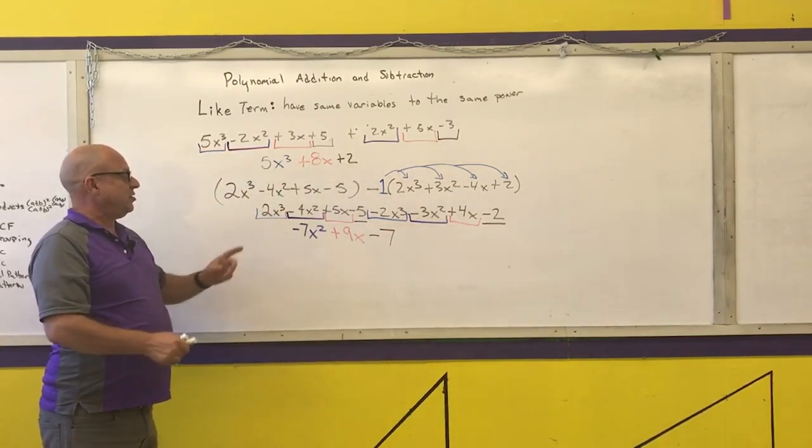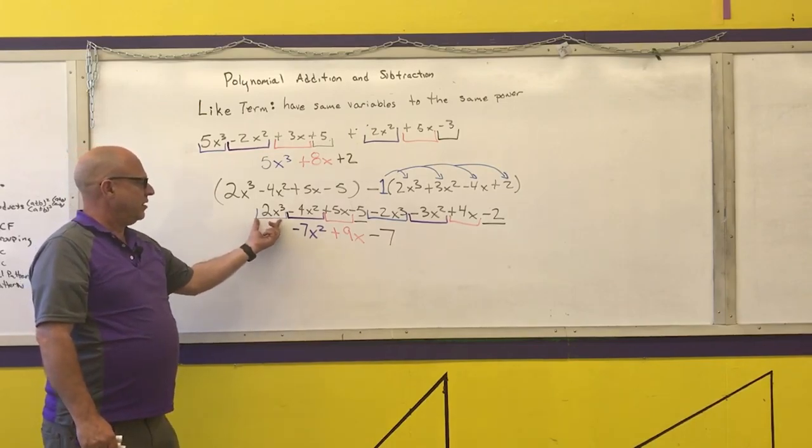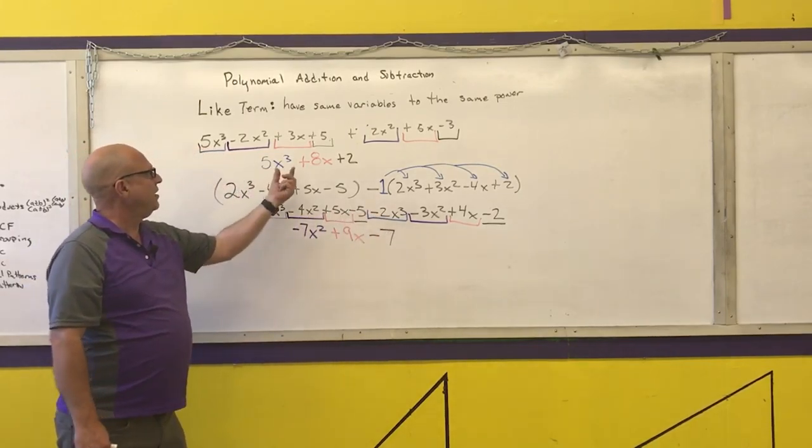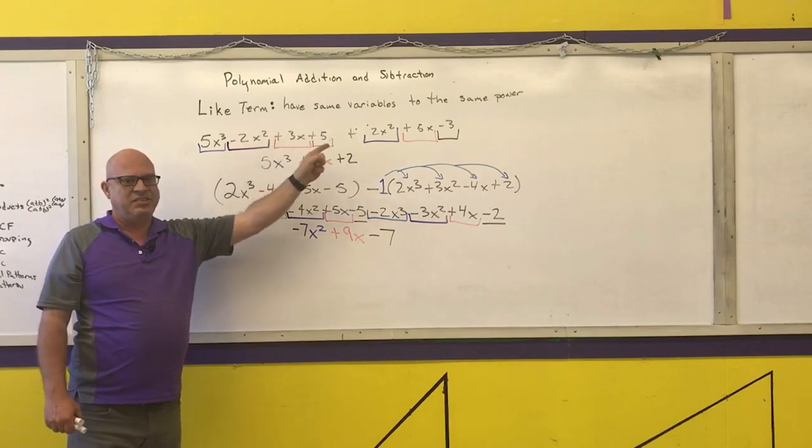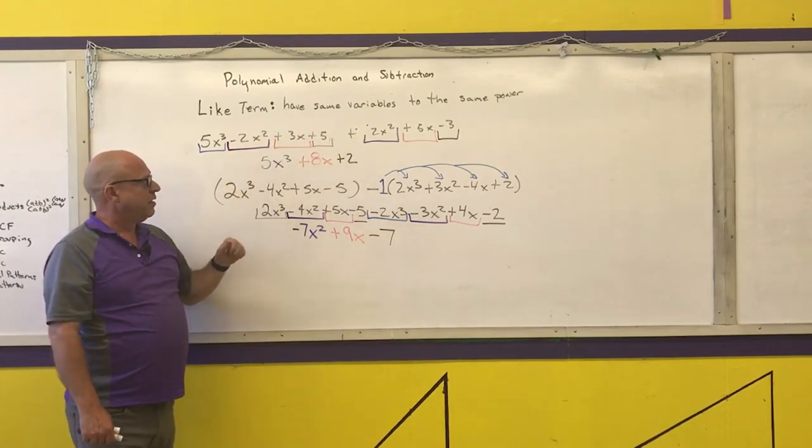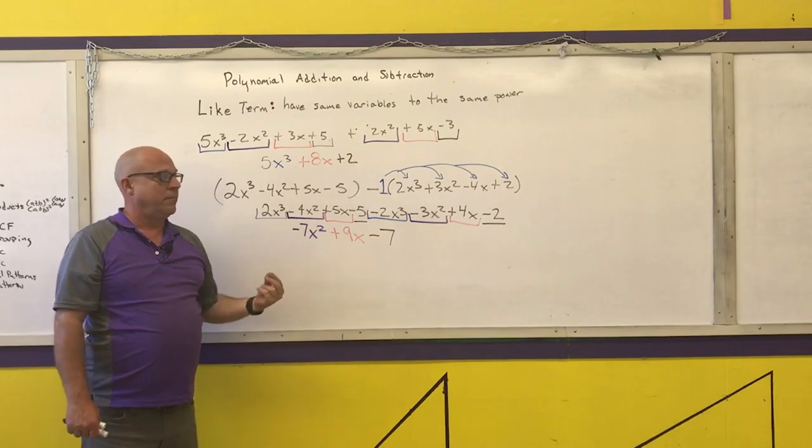Notice, we do not write the term if something disappears. I did not write the cube term here, and I did not write the x squared term here because I had zero of them. I don't need to write them. And my final answers are in standard form.